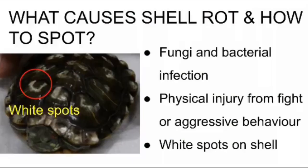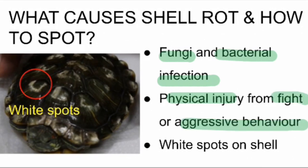So what causes shell rot and how do you spot it? Shell rot can happen because of fungi and bacterial infection, as well as physical injury from a fight or aggressive behaviour. If shell rot is present, white spots will appear on the shell of the turtle, as seen in the picture.